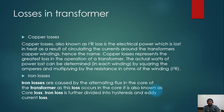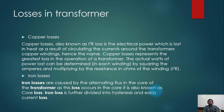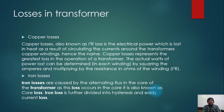Why is heat produced in the conductor? When electrons are flowing, they are colliding with atoms, and as a result heat is created. For example, if I rub my hands together, heat is produced. In the same way, when electrons flow in a conductor there is a collision which results in heat. Good conductors have fewer collisions.